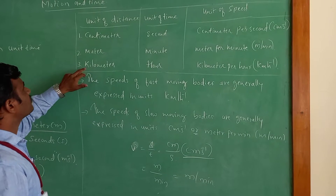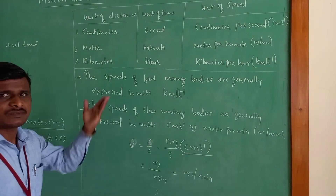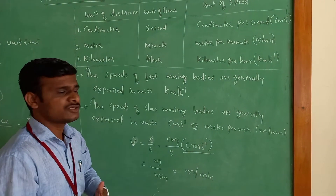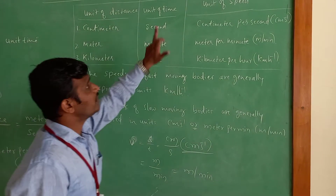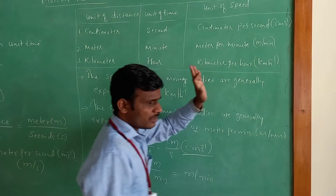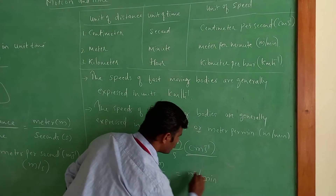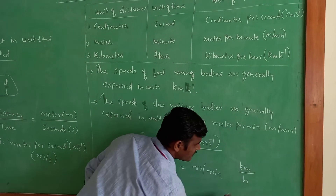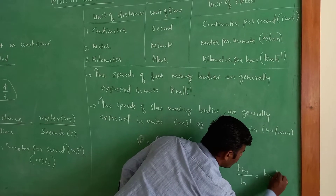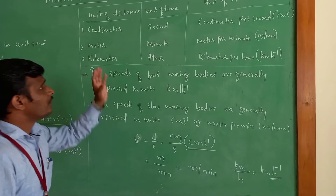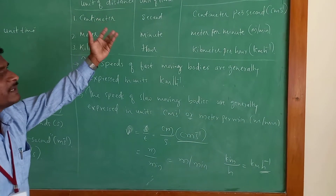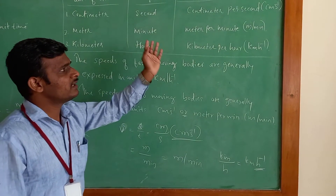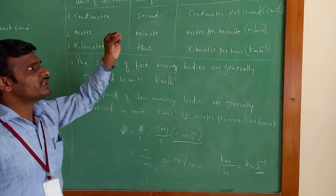Average speed means the total distance covered by an object divided by the total time taken. So how much distance we covered from start to destination, and how much time was taken — with that we calculate average speed. The average speed formula is: average speed equals total distance covered divided by total time taken. The unit of average speed is also metre per second.